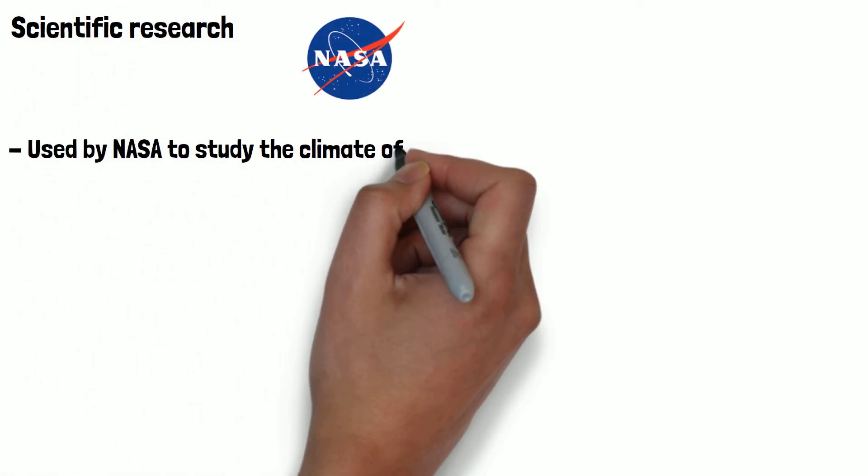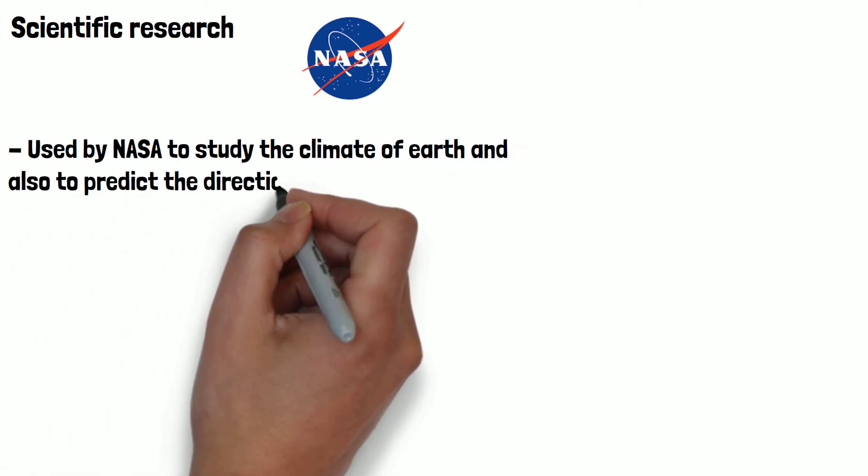Supercomputers are also used for scientific research. They have been used by NASA to study the climate of Earth and also to predict the direction of nearby asteroids to Earth.